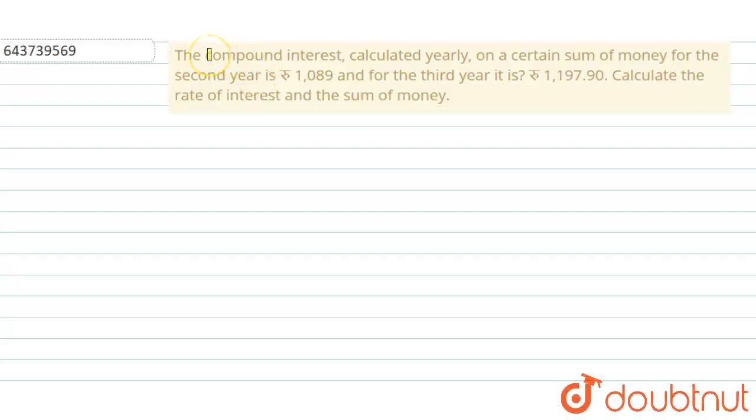Hello everyone, this is our question for today. The compound interest calculated yearly on a certain sum of money for the second year is rupees 1089 and for the third year it is rupees 1197.90. Calculate rate of interest and the sum of money.